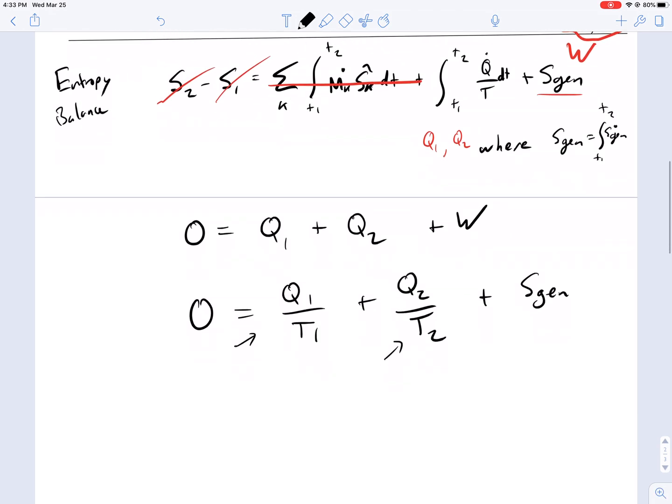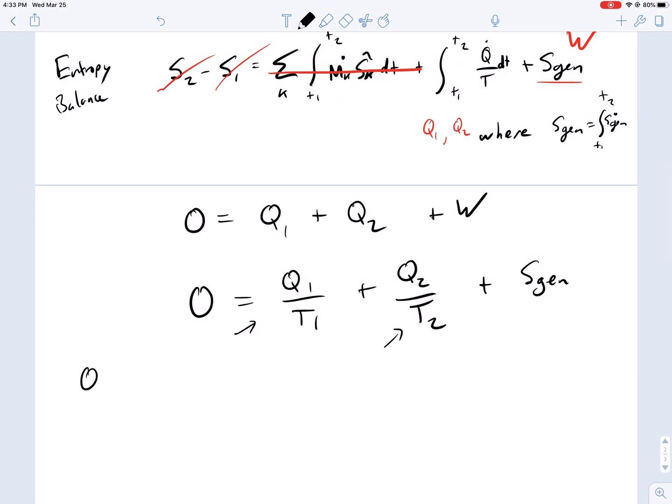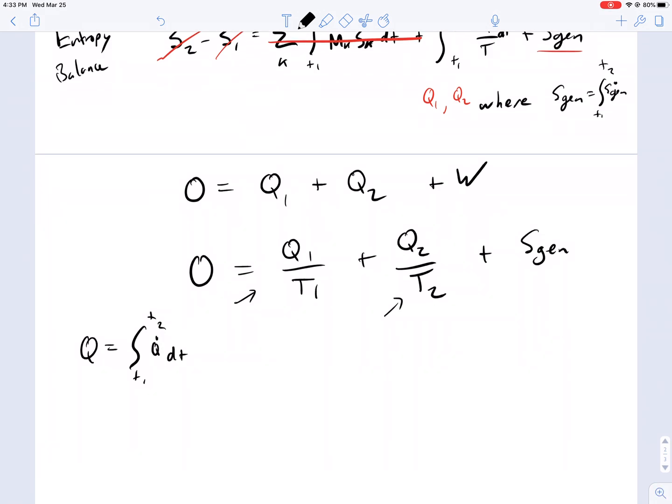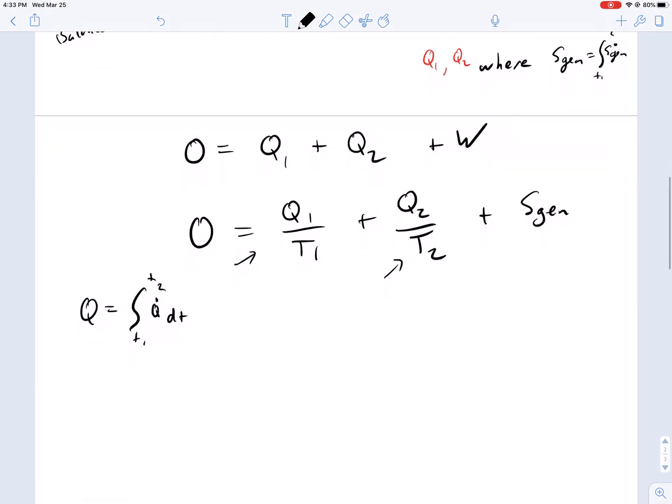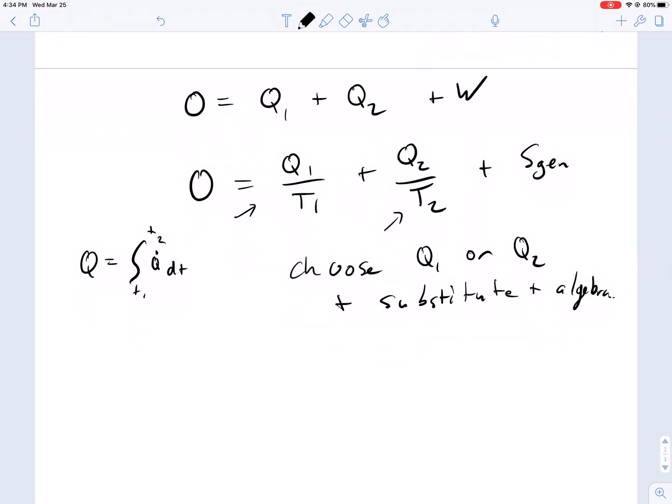Starting with the same equations as we did before, we can be specific. I'll just write this here: it's the integral of T1 to T2 of Q dot DT. And of course, W is the entire work term that we already pointed out earlier. We can then substitute. We can choose either one, choose Q1 or Q2 and substitute, and algebra to rearrange this equation.